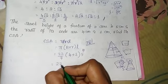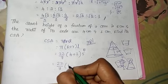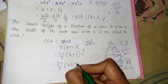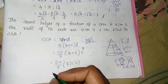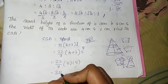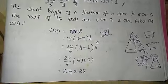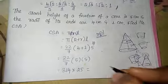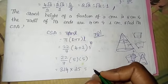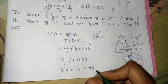So 22 divided by 7 into 4 plus 1 is 5, so 5 into 5. Now 22 by 7 is 3.14. Here we have 5 times 5 is 25. The answer is 78.57 cm².